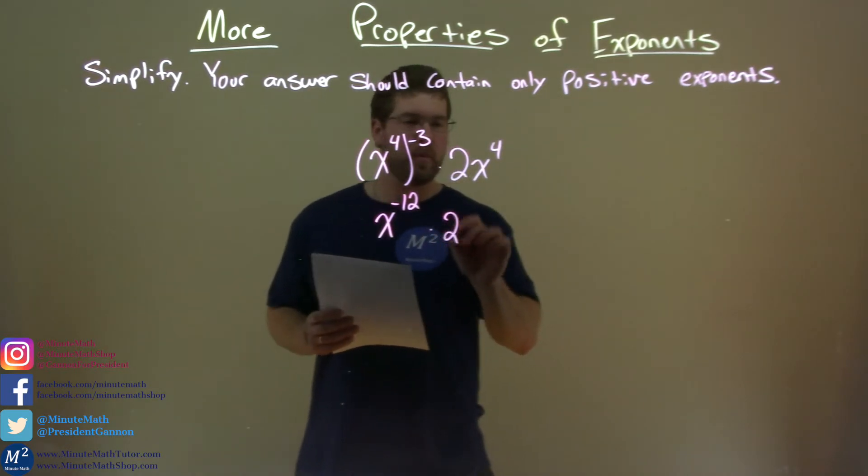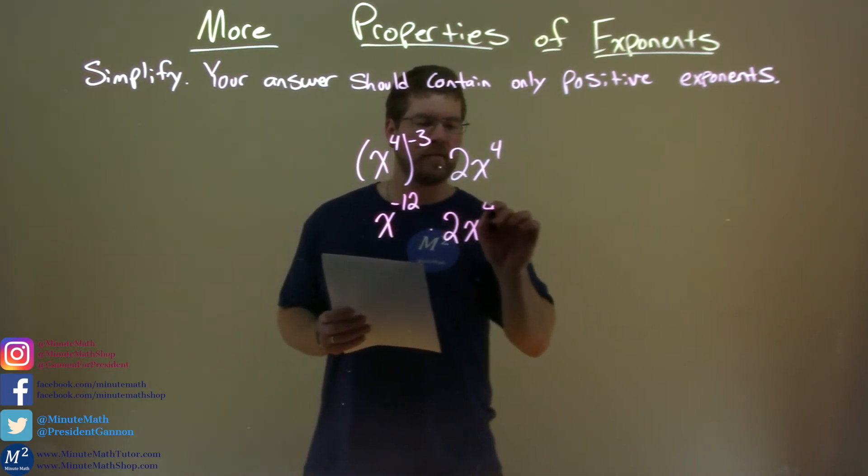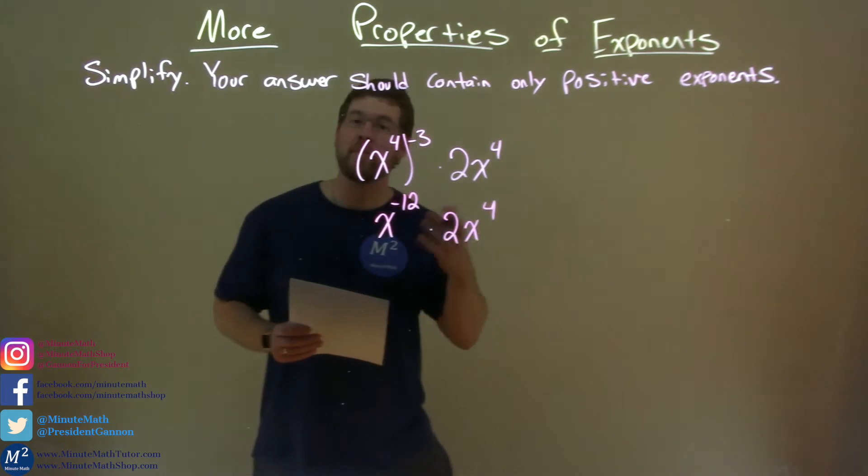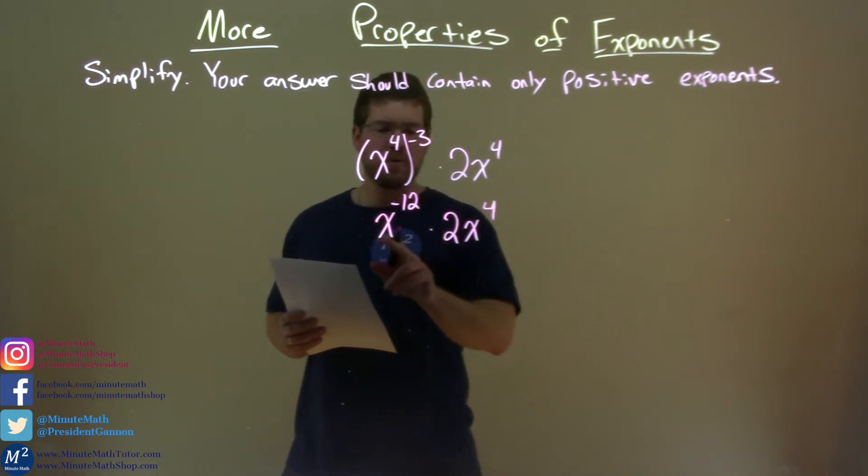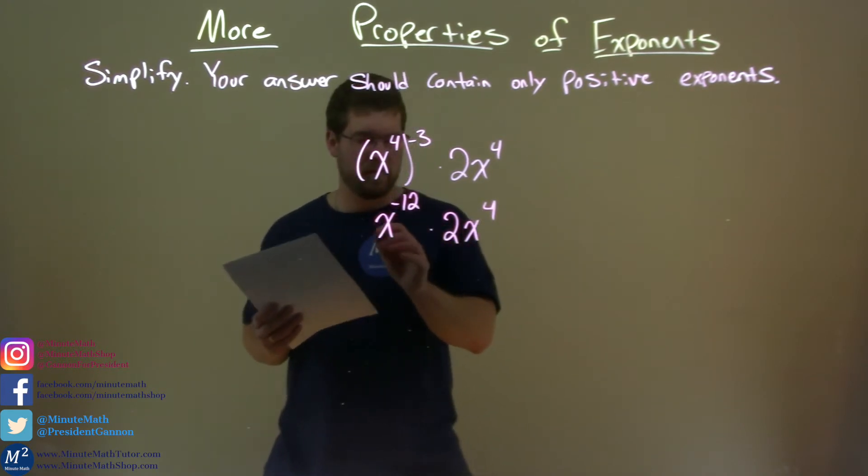Now, times 2, bring this part down, x to the 4th power. From there, where do we go? Well, we can put the 2. Normally we're at the coefficient of 2. It's 2 times this coefficient, which really is 1, right? So we have 2 here.